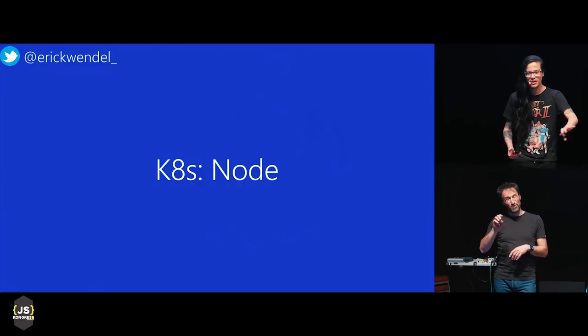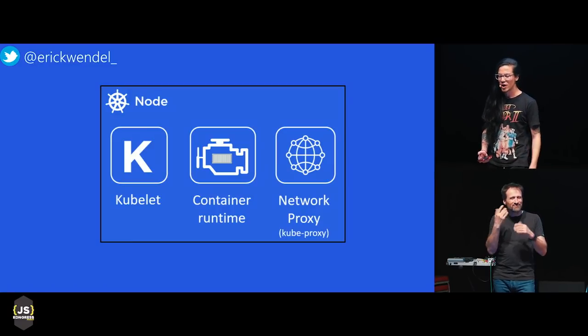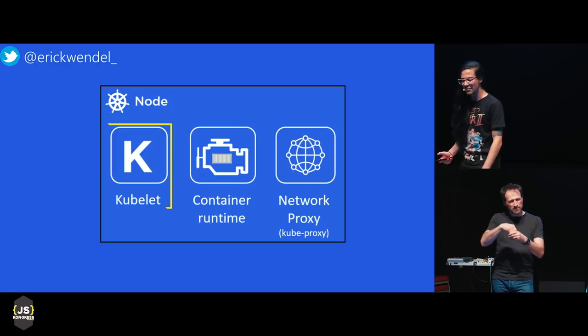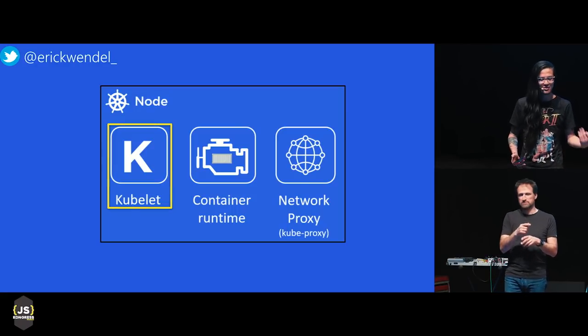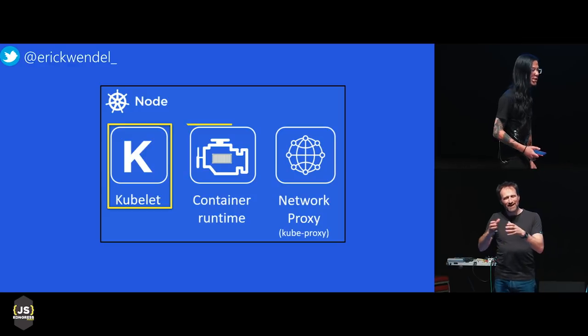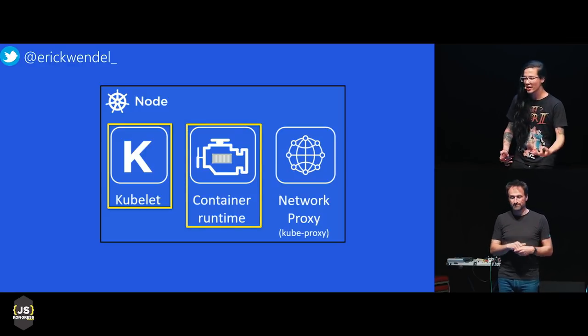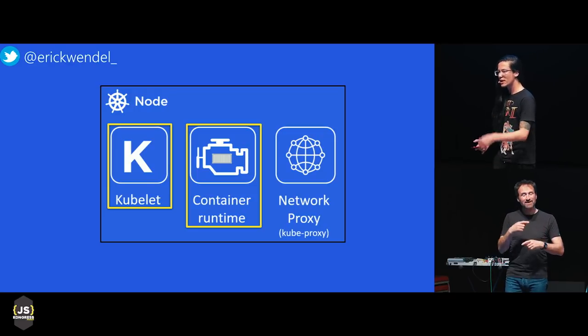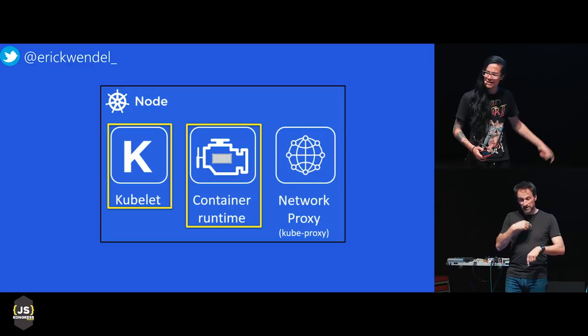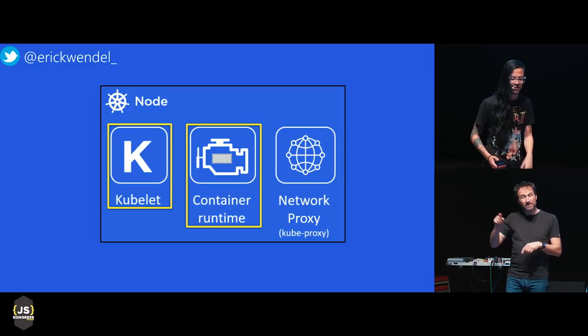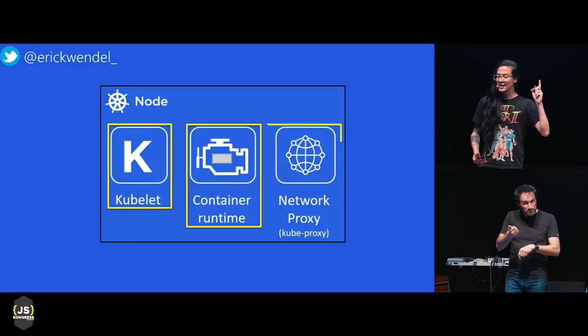We have the node, which is essentially our VMs in the cluster. Inside the node, we have the kubelet, which makes sure all containers run correctly inside our cluster. We have the container runtime — in our case Docker, but it could be other runtimes too. And we have the network proxy: inside our node we can use services to define our DNS and define IPs so applications can talk to each other.